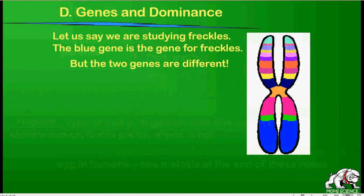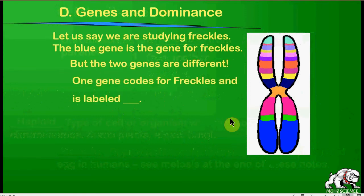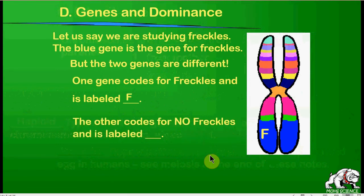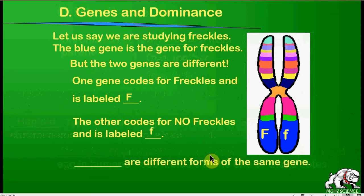How does dominance work? Let's deal with complete dominance using freckles as an example. The blue gene at the bottom is the gene for different types of freckles. One version codes for freckles and is labeled capital F — that's the dominant gene — and the other codes for no freckles and is lowercase f. These two different forms of the same gene are called alleles.